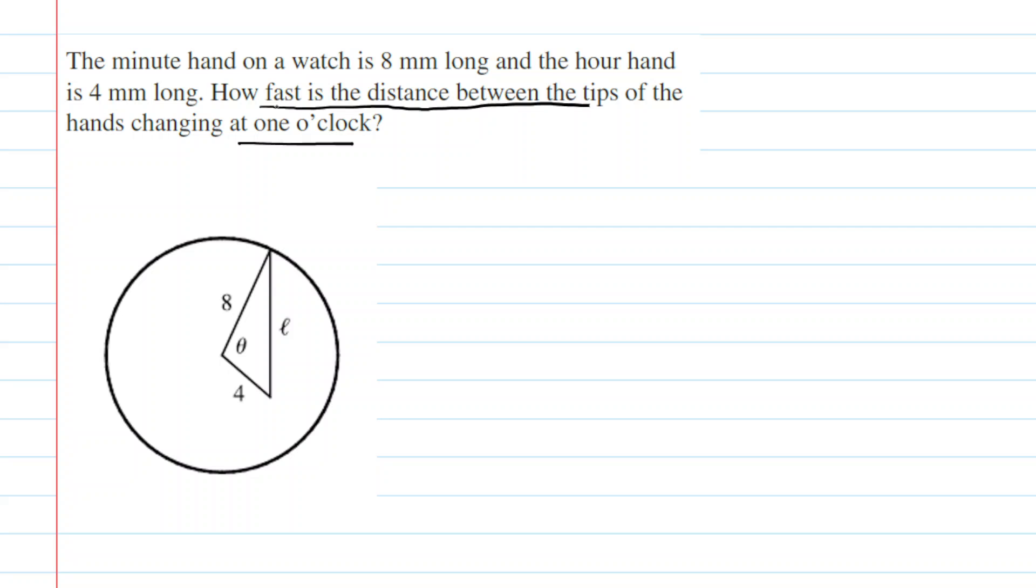When you hear this phrase 'how fast', you have to start thinking of rates of change. When we say how fast is the distance between the tips changing, what that question is really asking us is, what is the value of dL/dt? That is the rate of change in the distance between the tips of the hands per unit time. We have to come up with an equation that's going to help us solve for this dL/dt.